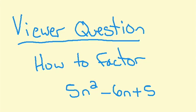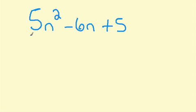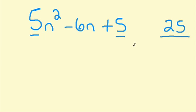I'm going to go ahead and get a fresh page so we can look at this problem. 5n squared minus 6n plus 5. The first thing is we're going to multiply the a term with the c term. 5 times 5 is 25. I'm going to do that off to the side here to find our factor pairs.